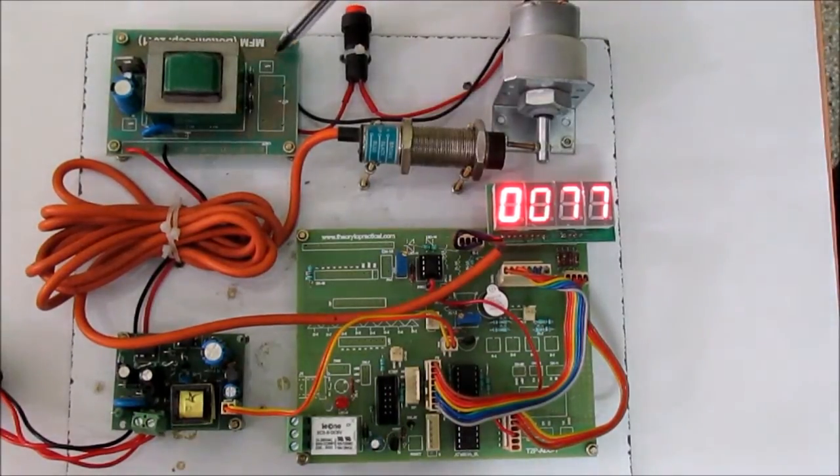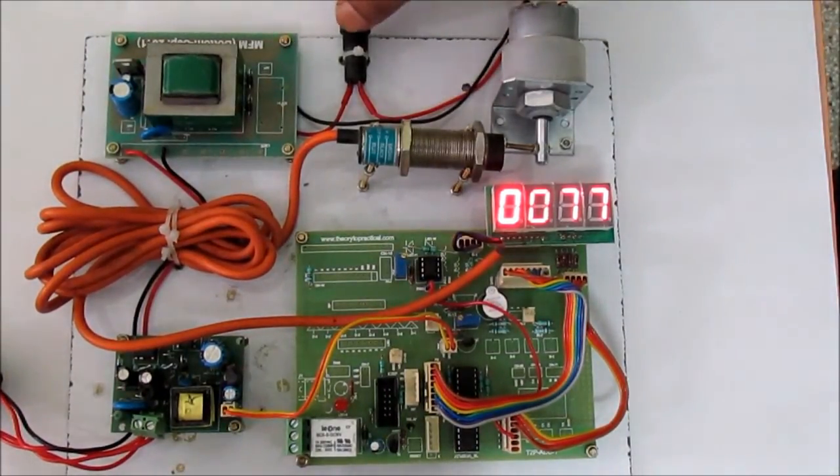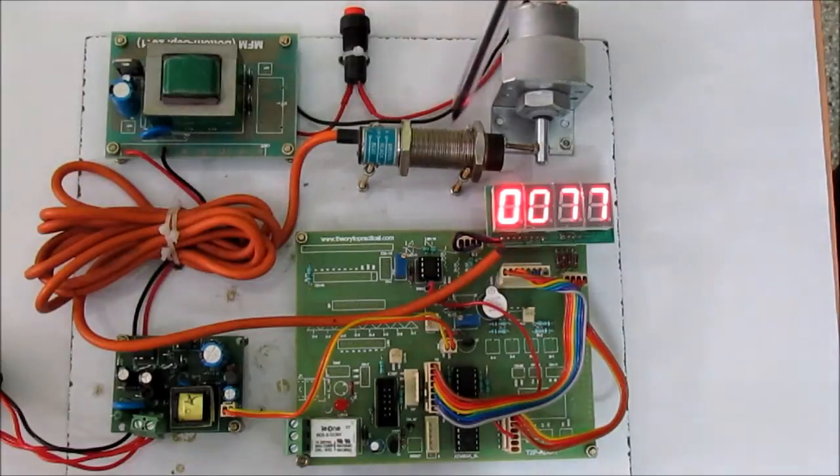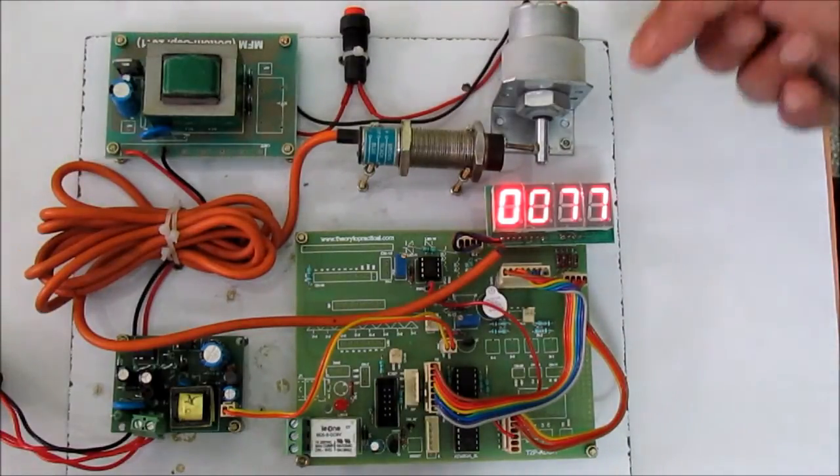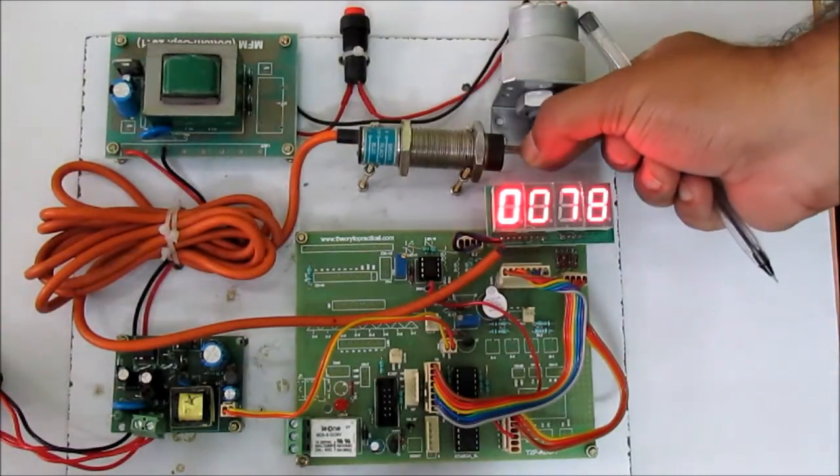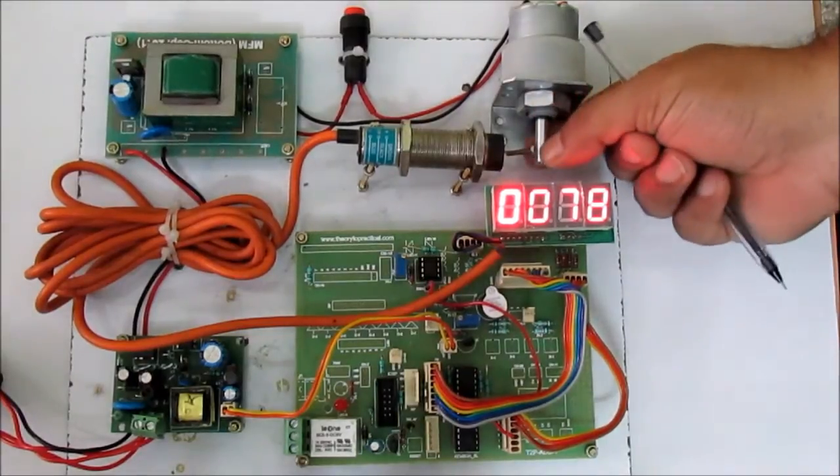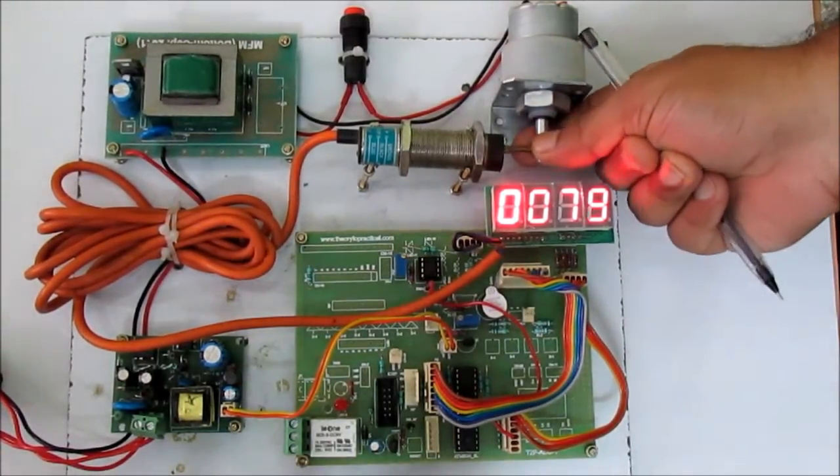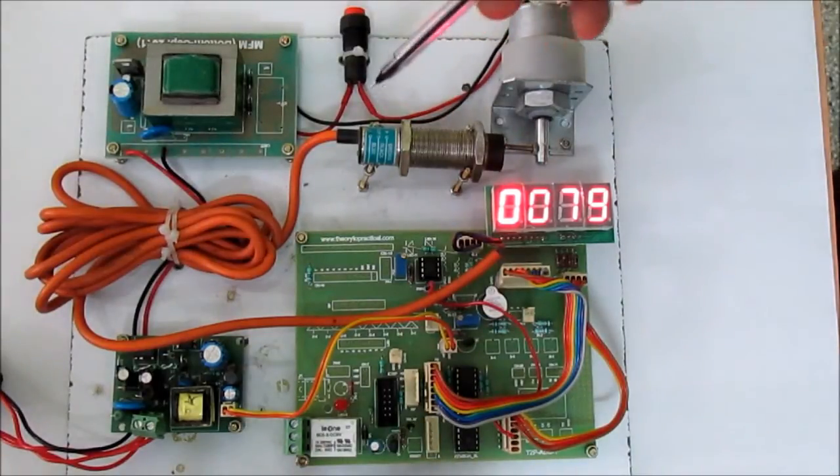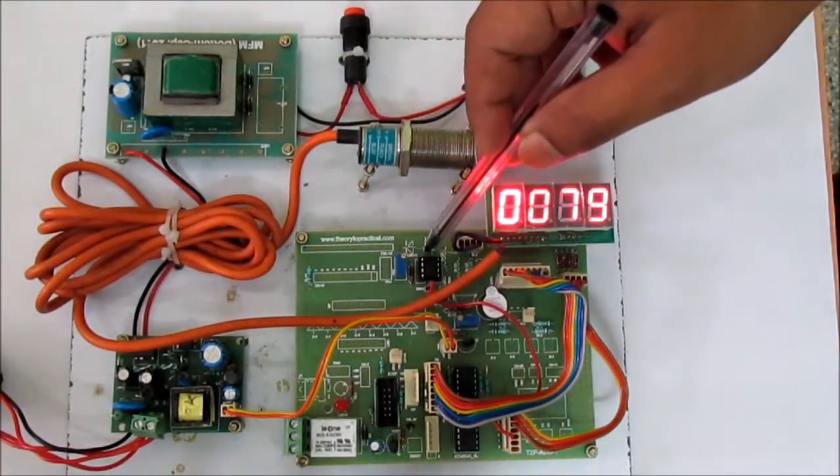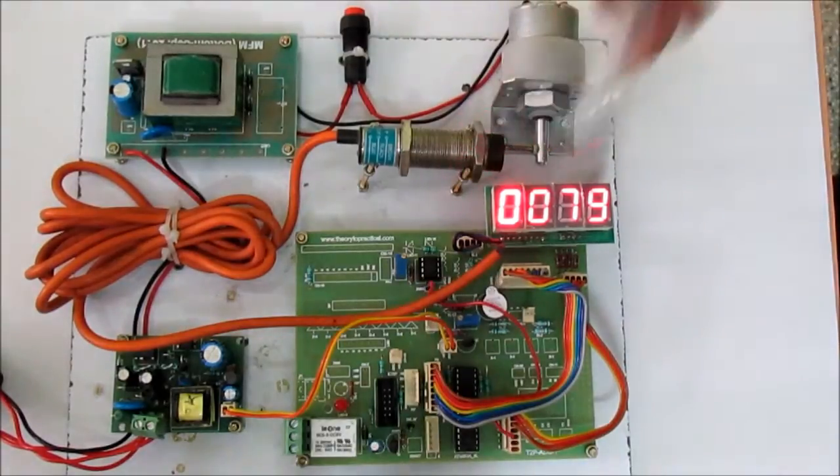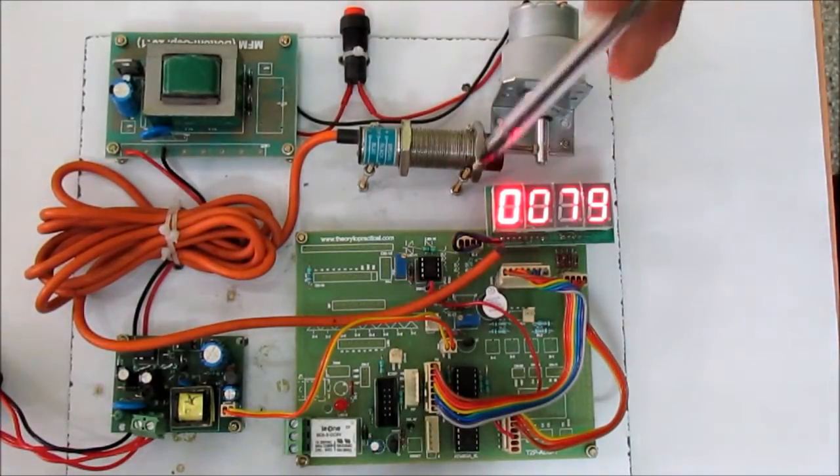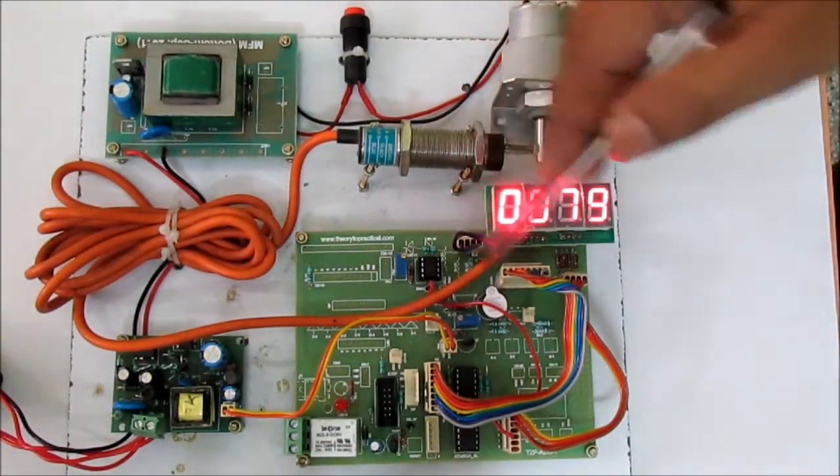...from this AC to DC power converter through this switch. This one is the proximity sensor. When a piece of iron or metal comes in contact with it, it generates a pulse. This pulse is going to this operational amplifier which is being compared with some reference value, and the output of the op-amp is given to...